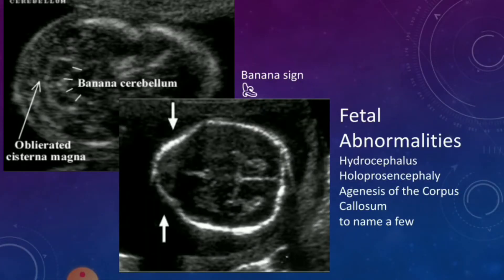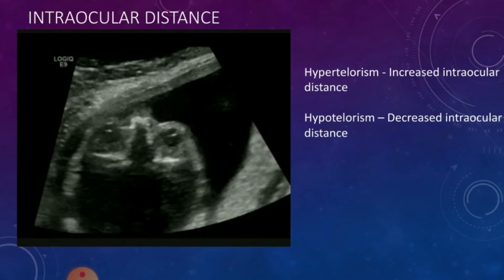A transverse view of the eye can give you the intraocular distance and give you hints as to whether they have hypo- or hypertelorism. Focusing on the eyes, you can see fetal movements like the lens moving side to side or around. You can also see blinking if you're in a coronal view.